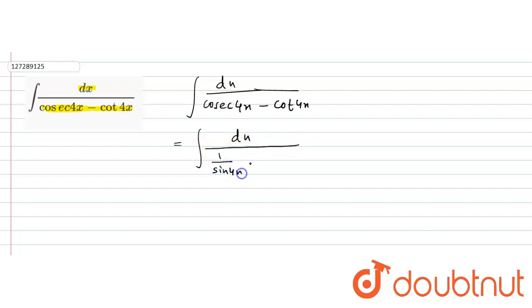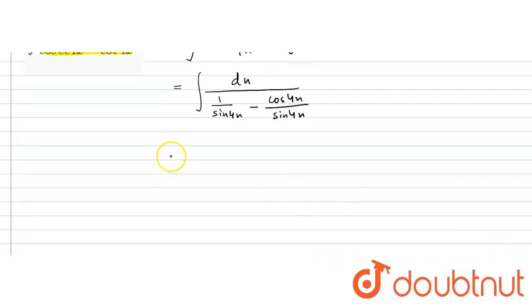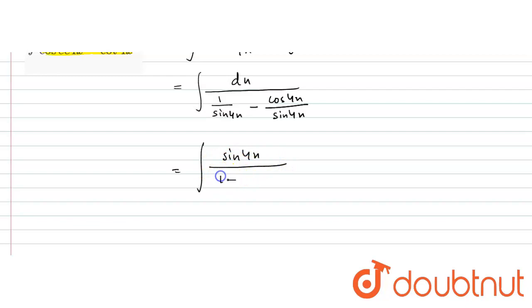sin4x minus equals to one quarter — first, the manager of cos4x by sin4x. So what is sin4x? It's also good. Now for one minus cos4x dx.